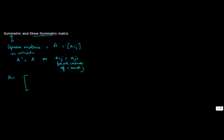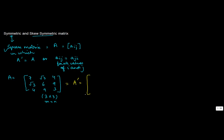Let's say you have a matrix A given as a 3×3 matrix with entries 7, root 3, 4 in the first row. The order of this matrix is 3 by 3, since the number of rows equals the number of columns, making it a square matrix.